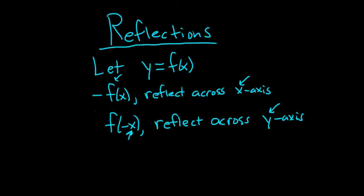So negative in front of the y — because y is equal to f of x — reflect across the x. Negative in front of the x, reflect across the y. A really easy, cheesy way to memorize it: if the negative is in front of the y, you reflect across the x. That's how I memorize it.